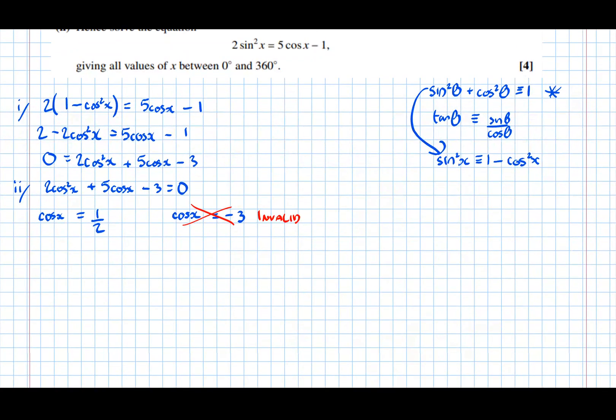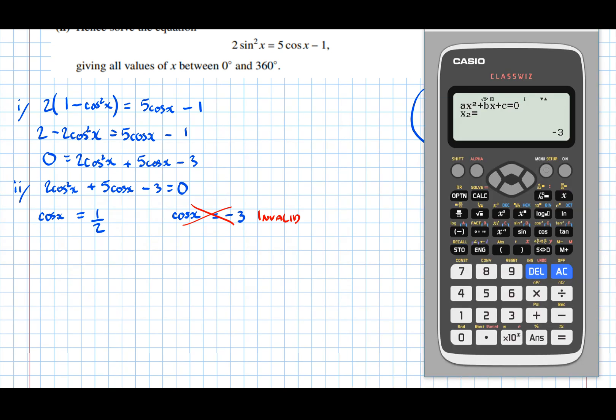So we've got one equation to solve now. So, cos x equals 1 half to solve between 0 and 360. So, getting the first solution, go back to ordinary calculation mode.